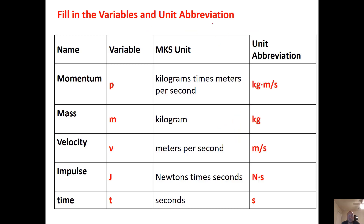Here are the variables found in the equations. P is for momentum, M is mass, V is velocity, J is impulse, and T is time. For unit abbreviations — momentum: kg·m/s; mass: kg; velocity: m/s; impulse: N·s; time: seconds.